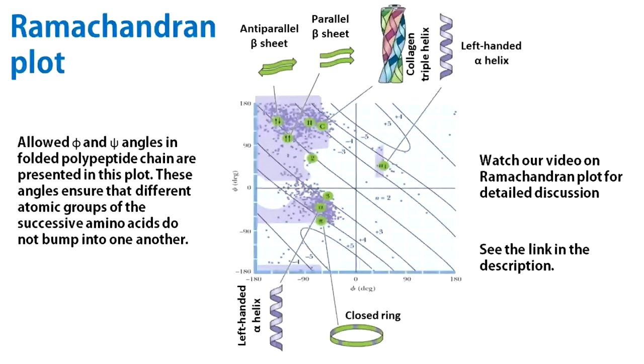Allowed values of phi and chi angles is represented as the Ramachandran plot. The Ramachandran plot tells us about the conformations that a polypeptide chain can adapt, but it does not tell us whether these adapted conformations will be stable.